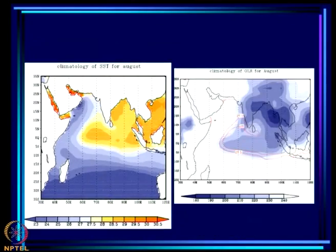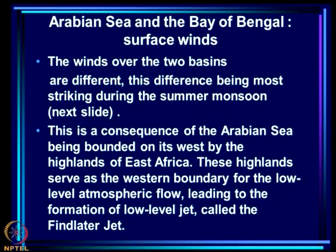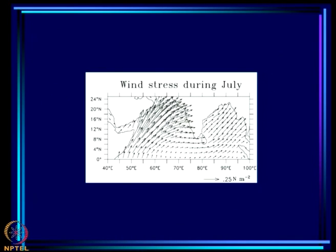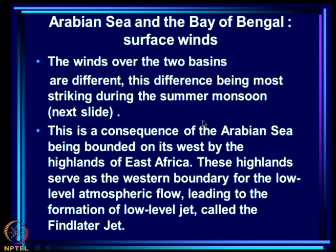To understand the variability of the convection pattern over the Arabian Sea and Bay of Bengal, it is clearly important to understand why the SST varies as it does, because the variation of convection is definitely linked to the variation of the region over which SST is above the threshold. Now, the winds over the two basins are different — note that the direction of the wind is not different, but the wind speed is different, this difference being most striking during the summer monsoon. The wind stress is much higher over the Arabian Sea than over the Bay of Bengal.